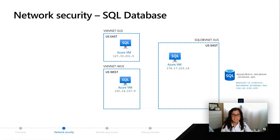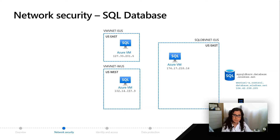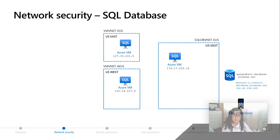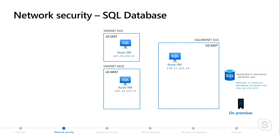What you're seeing here is a typical scenario where you have a virtual machine in one virtual network — each of those dotted lines represents a virtual network. This would be US East on the right. You might have another virtual network with Azure VMs in US East, but in a different virtual network on the top left. In the bottom left, you might have another virtual machine or application running in West US in its own virtual network.